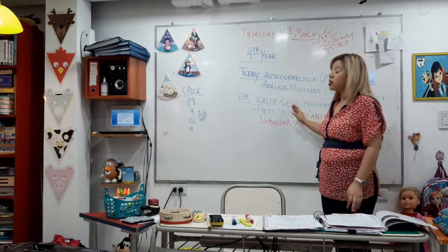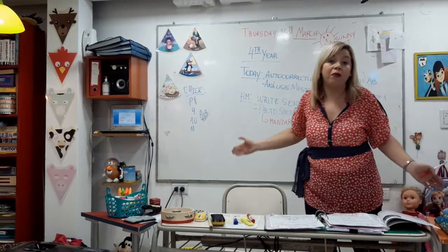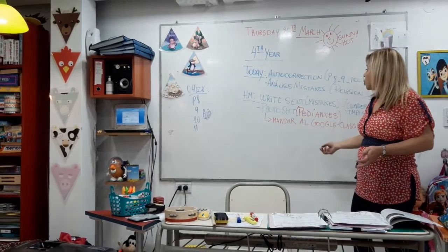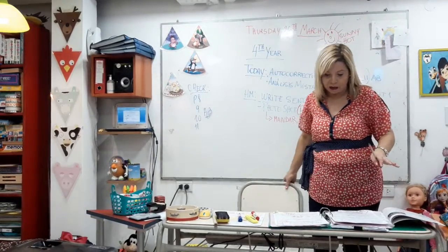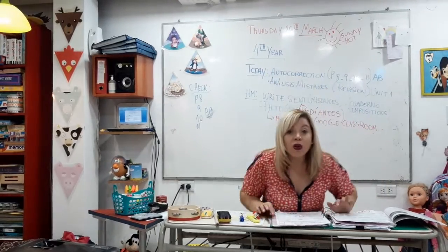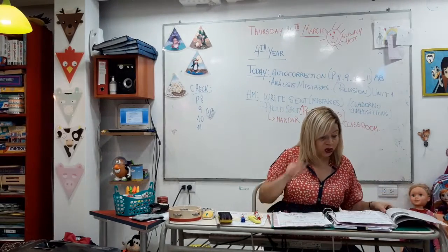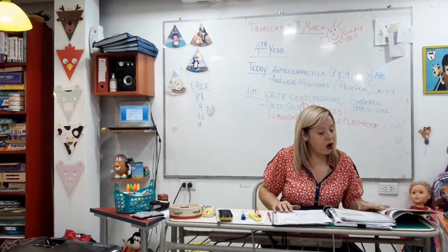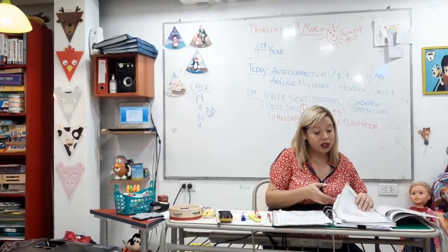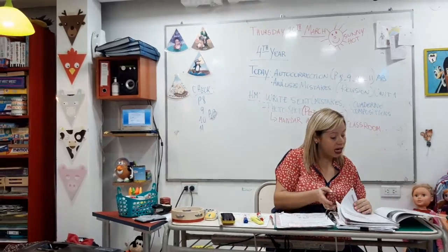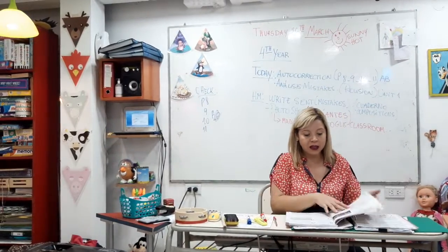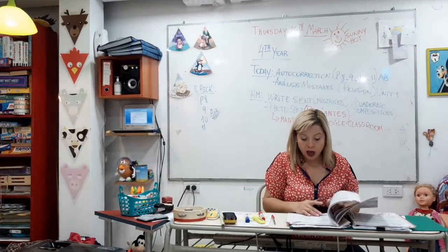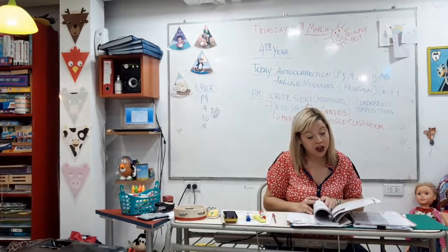The only piece of homework is to rewrite sentences with your mistakes — and for those who didn't have many mistakes, it will be very easy. And also the photo shot, which I'm going to explain. Now I want you to open your activity books. Open your activity books to page eight — exercises one and four. I'm going to dictate very quickly.